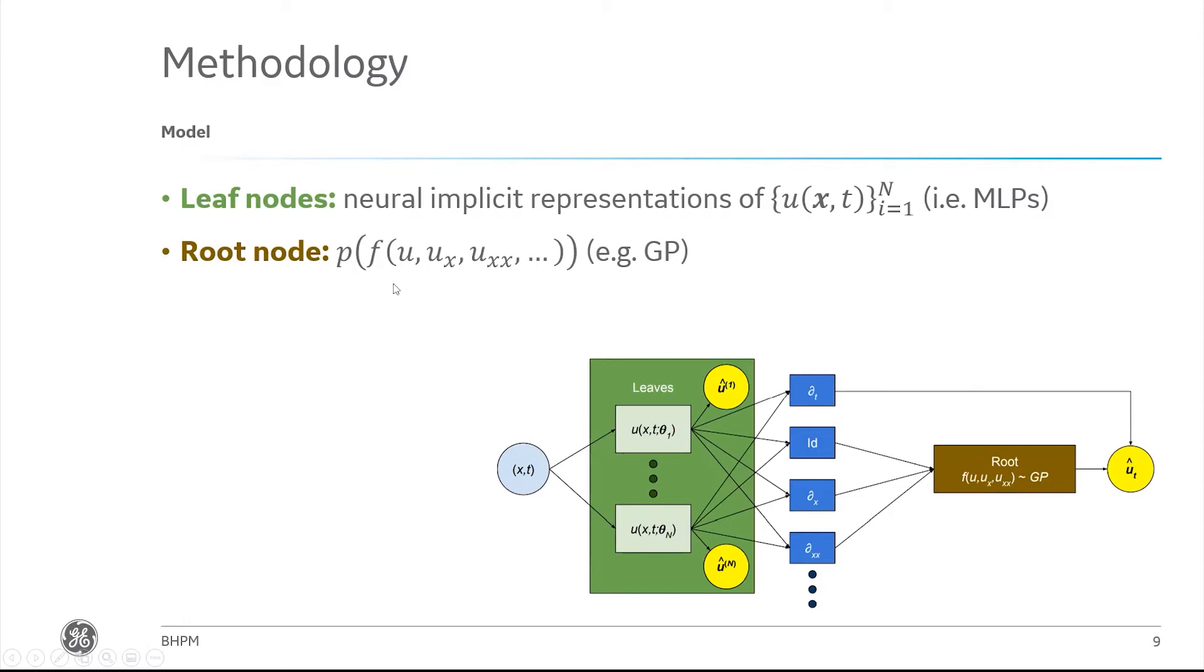Because we're being Bayesian, we're going to pose a distribution over these functions. One thing you might imagine using to express that distribution is a Gaussian process, which is what we're going to be using in this context, though the methodology does admit some general distribution over operators. The key is that we want to be Bayesian about it and to be able to update our belief on it.